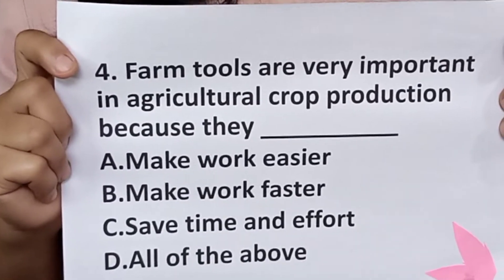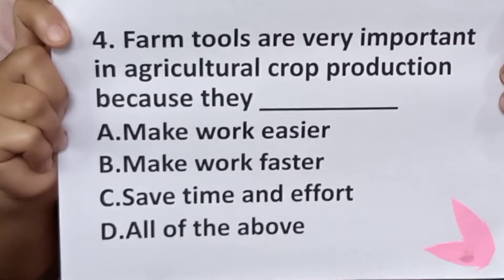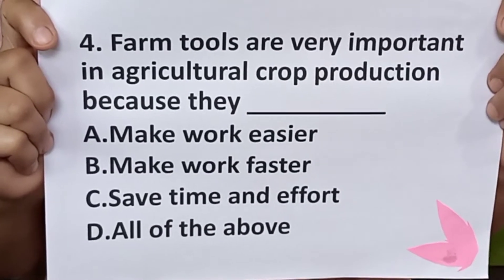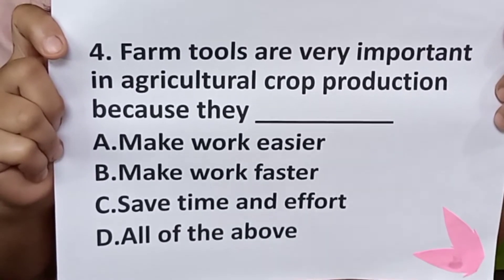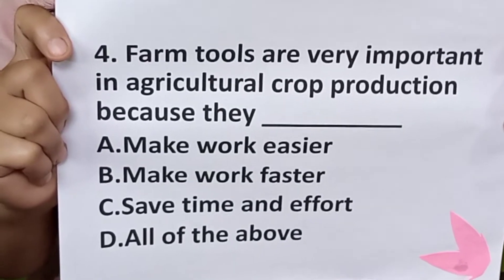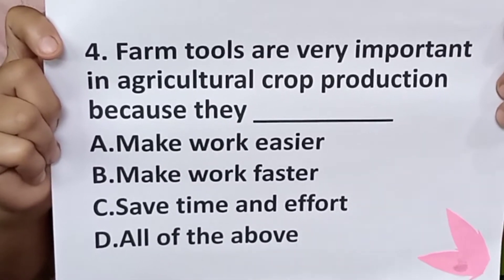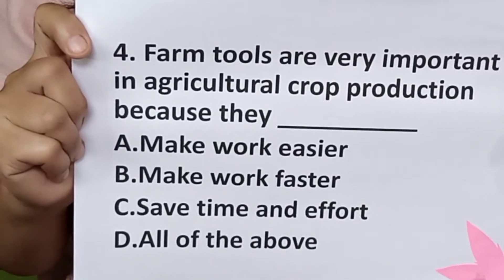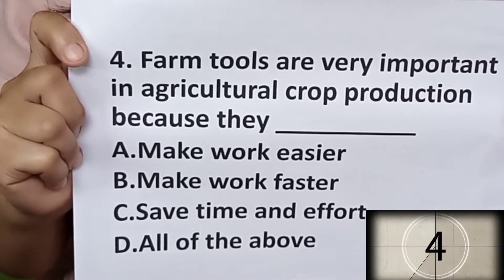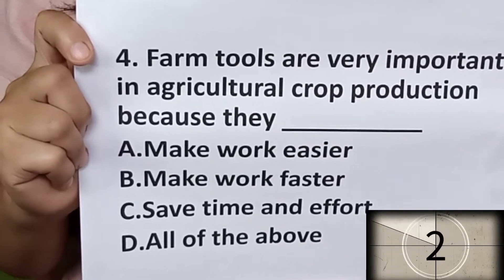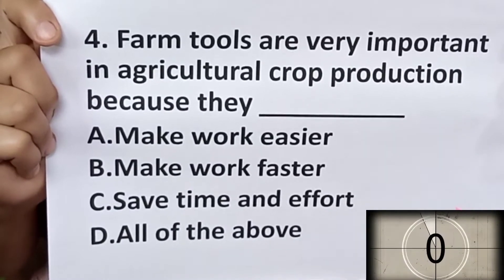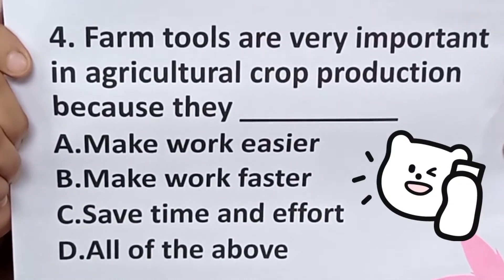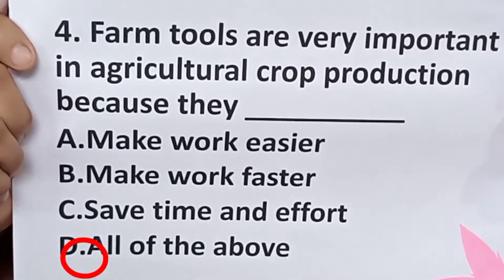Question number four: farm tools are very important in agricultural crop production because they — letter A, make work easier; letter B, make work faster; letter C, save time and effort; and letter D, all of the above. Very good, your answer is correct. The answer is letter D, all of the above.